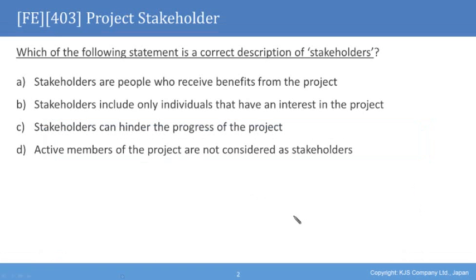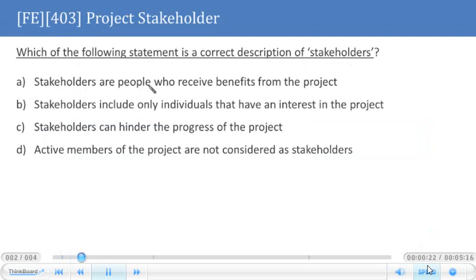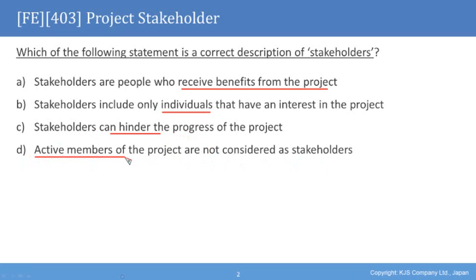In this question about project stakeholders, we need to correctly describe what a stakeholder actually is. Which of the following statements is a correct description of a stakeholder? Option A: stakeholders are people who only receive benefits from the project. Option B: stakeholders include only individuals that have an interest in the project. Option C: stakeholders can hinder the progress of the project. Option D: active members of the project are not considered as stakeholders.